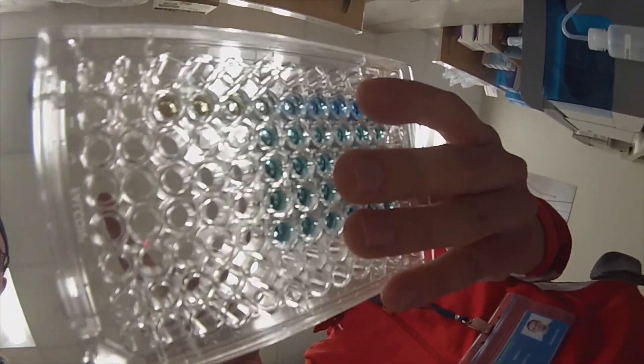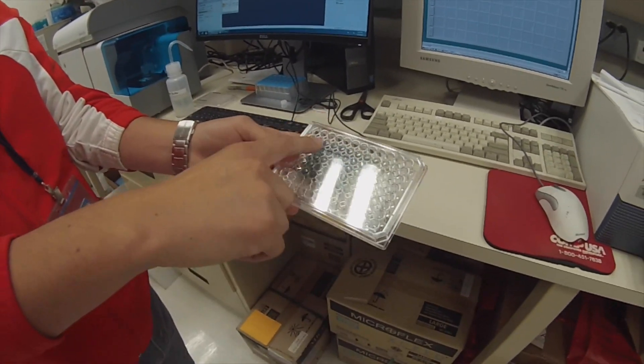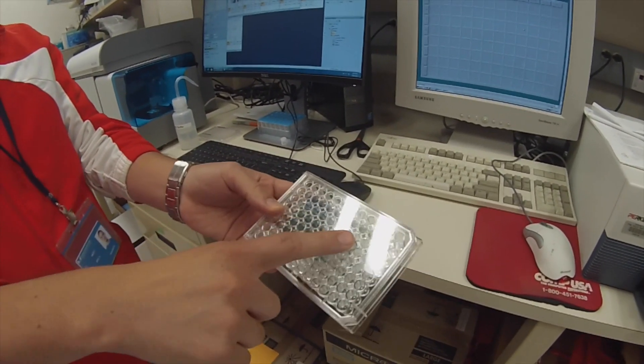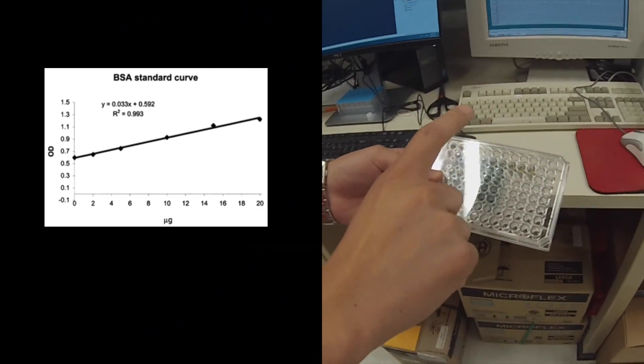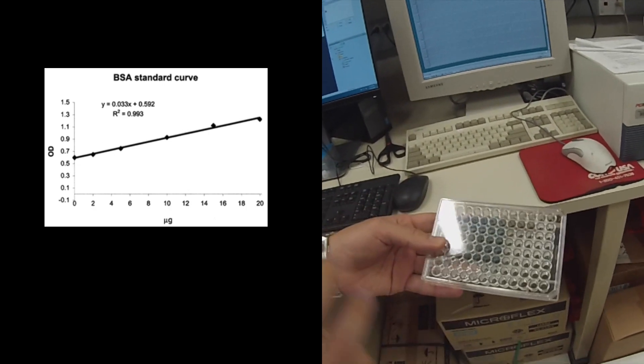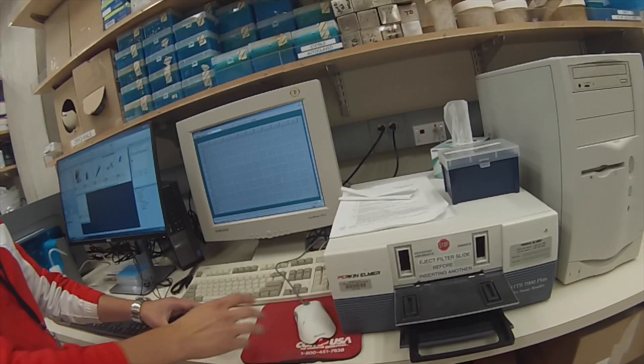The plate reader will give us the optical density of each of the wells. At the end we're going to have a curve so that we can compare the amount of protein, and then we will know exactly how much protein we have.